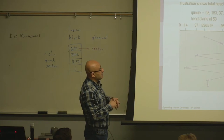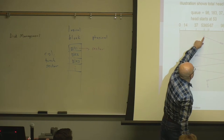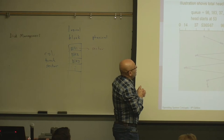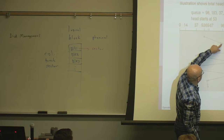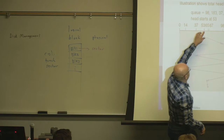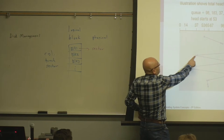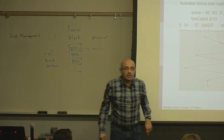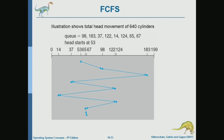In First Come First Serve, these are requests for cylinder numbers. Assuming that our head is here and we have these requests in the queue, the first request is 98, so the head will move to 98. Then there is a request for cylinder 183, so the head will go to cylinder 183. Then there is a request for cylinder 37, so the head will move all the way to cylinder 37. Then there is a request for cylinder 122, so it will move to 122.